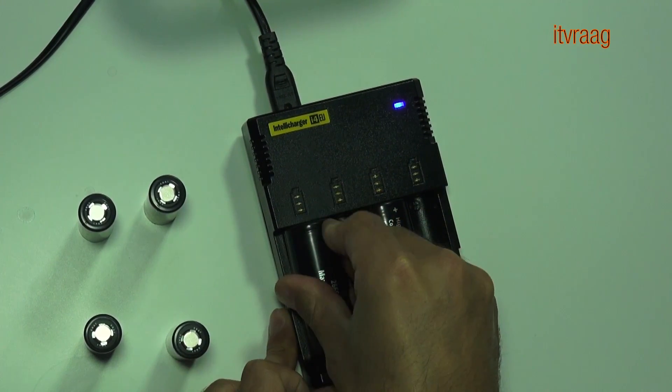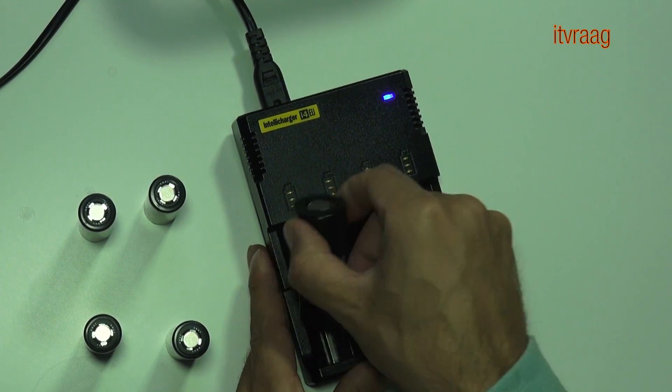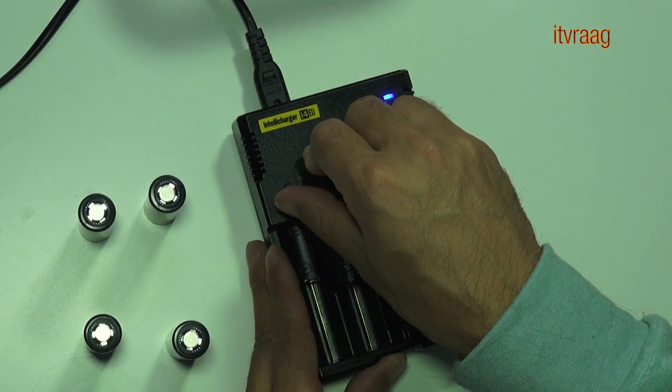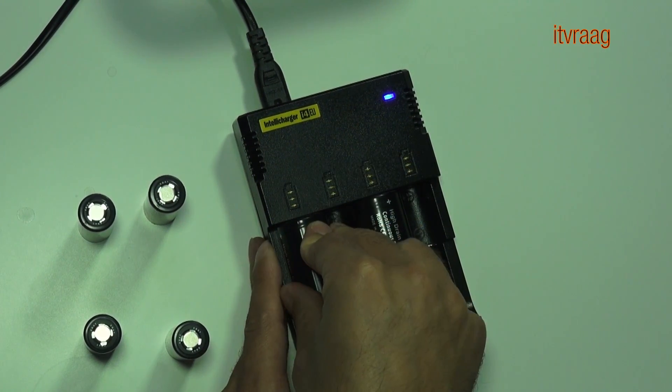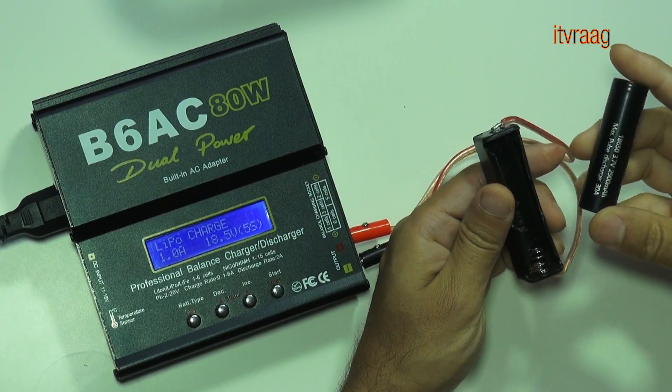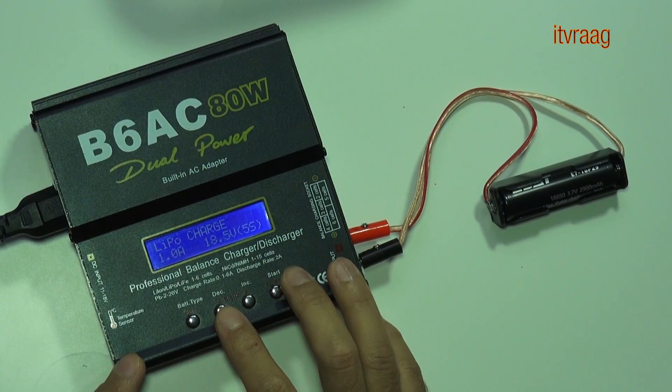Even though the Intellicharger i4 supports 26650 cells, you can only charge one at a time due to its size. And then I discharged the cells using my iRC charger.